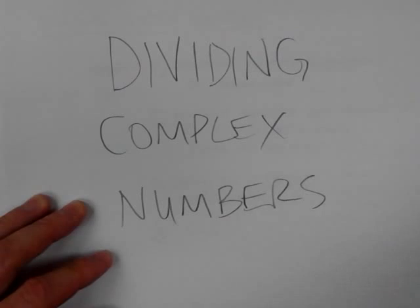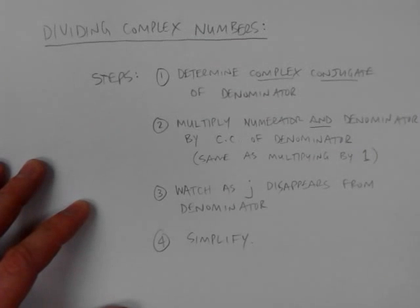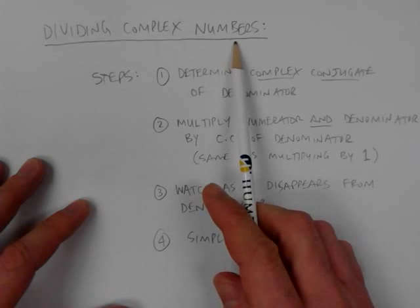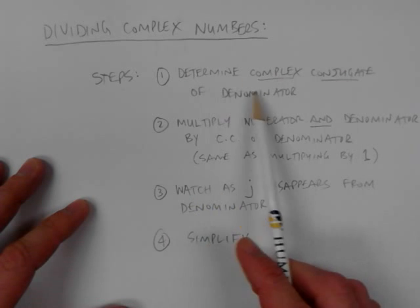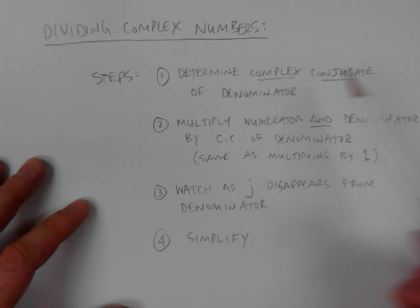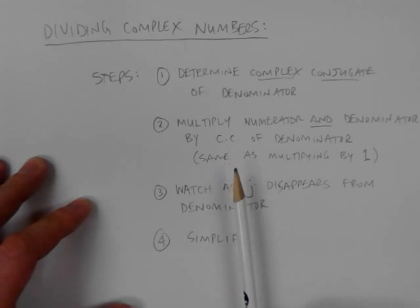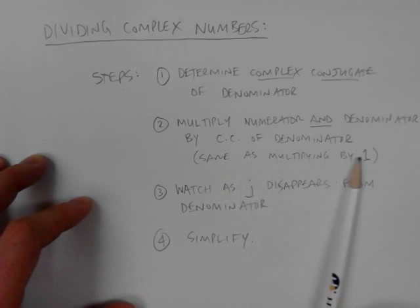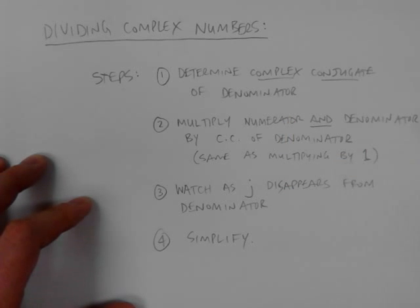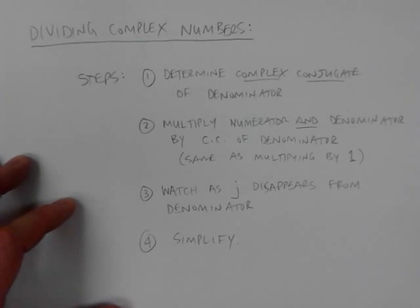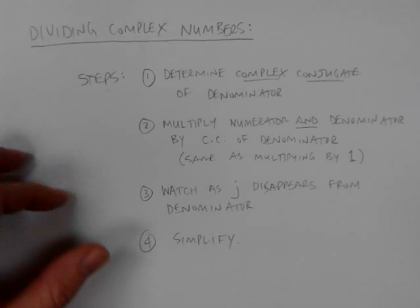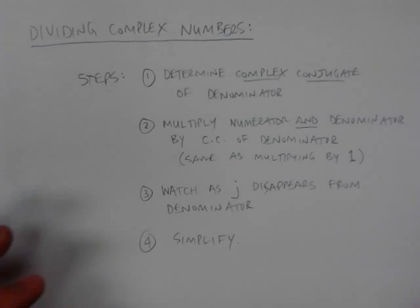Here are the steps. First, if you end up with a complex number to divide, find the complex conjugate of the denominator. Then multiply the numerator and the denominator by that complex conjugate. It sounds complicated, but once we do an example it should be clear. It's the same as multiplying by one, because if you multiply the top and the bottom by the same thing you're multiplying by one — anything divided by itself is one. When you do that, j will disappear from the denominator, and then you simplify. It's easier than you think.